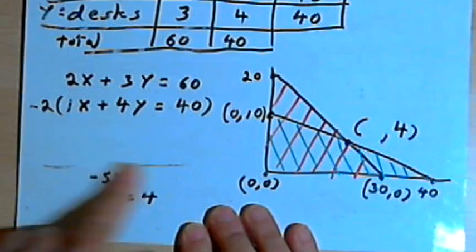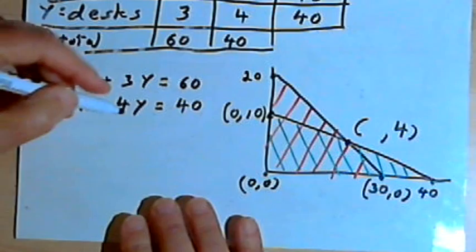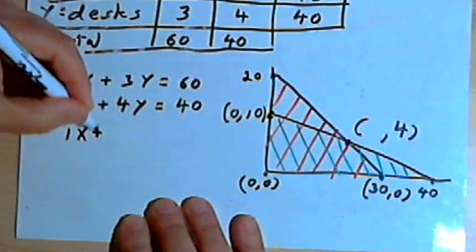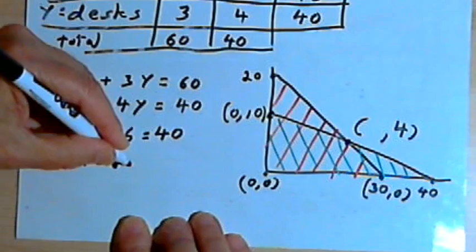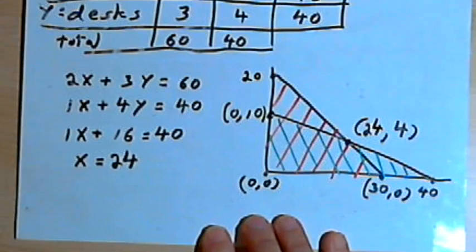Now let's take that y equals 4 and plug it into this equation, 1x plus 4y equals 40, and we'll find out what x is. So I'll have 1x plus 4 times 4, which is 16, equals 40. If I subtract 16 from both sides, I get x equals 24. So now I've got my last corner point.